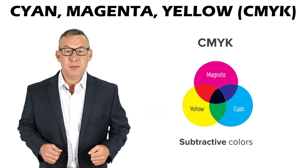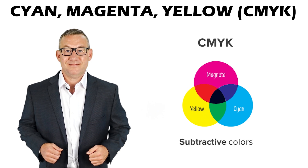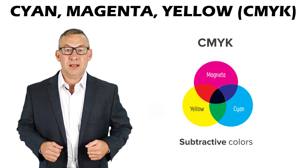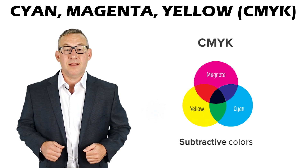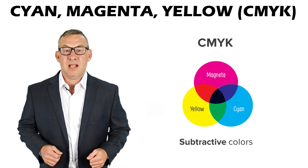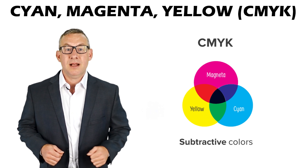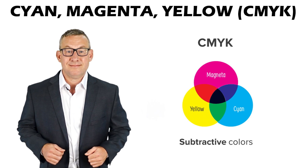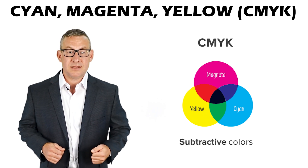The CMYK color system is the subtractive color system. It creates colors with the bases cyan, magenta, yellow, and black — the last value, K, is for black. The absence of all bases is white light. Subtractive colors absorb parts of the light spectrum, leaving the rest behind. Mixing all subtractive colors creates black, and the addition of K is necessary to create true black.